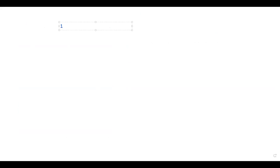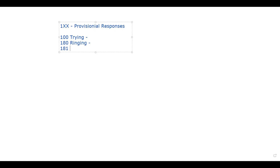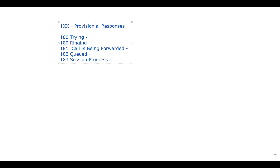So under 1xx provisional responses, the first one is 100 Trying. After 100 Trying, we have 180 Ringing. These are part of 1xx provisional responses. After that we have 181, which is Call is Being Forwarded. Then we have 182 Queued, and finally 183 Session Progress. These five I'm going to discuss today.